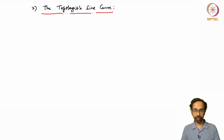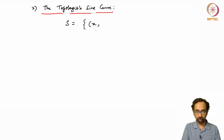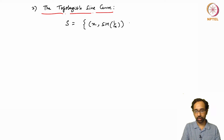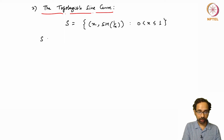Now we come to the second example, which is that of the topologist's sine curve. This is the set S, which is defined as the set of points in R², the Euclidean plane, of the form (x, sin(1/x)), where x lies between 0 and 1, with 0 excluded and 1 included.